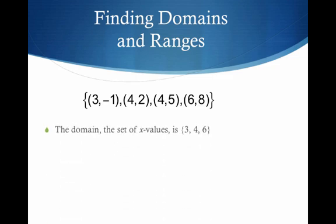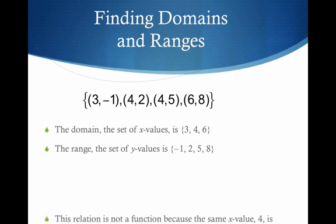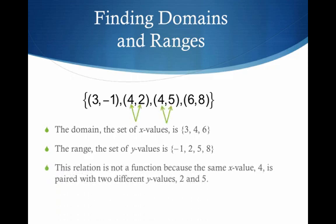The domain, as we know, is the first components. I have a 3, a 4, and a 6. The range — those are the y components or the second components — I have negative 1, 2, 5, and 8. Now, is this a function? When you look at these four ordered pairs, the key here is 4 goes to 2, and 4 goes to 5. So it is not a function because 4 is going to two different y values.